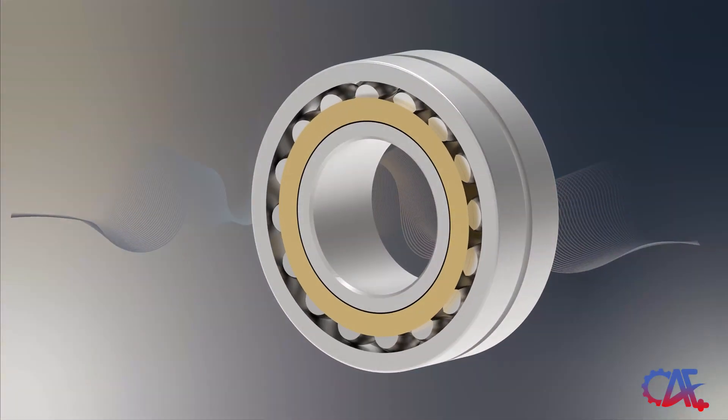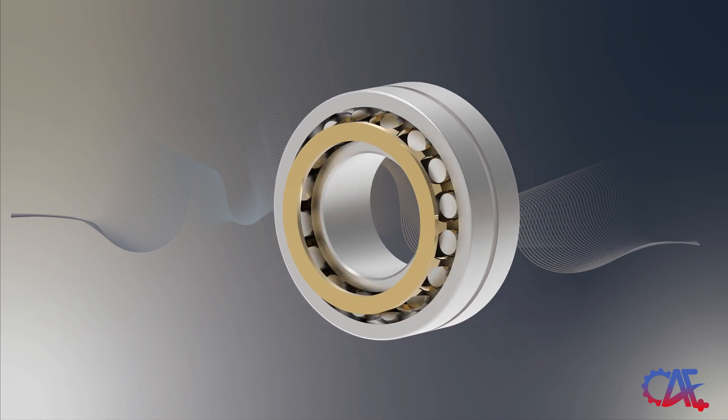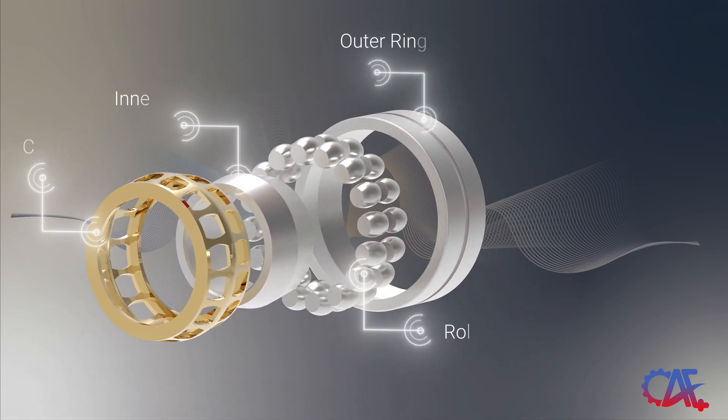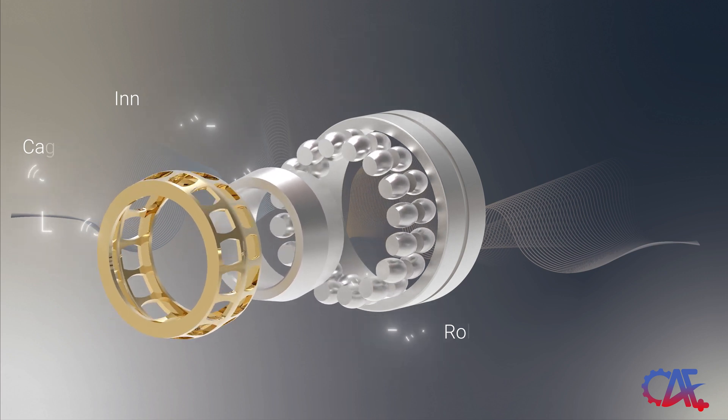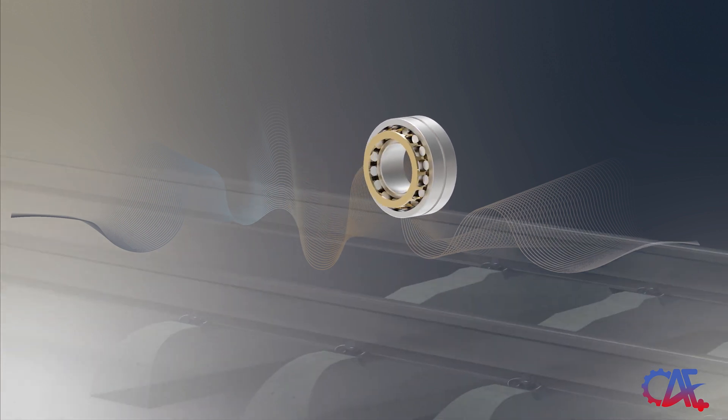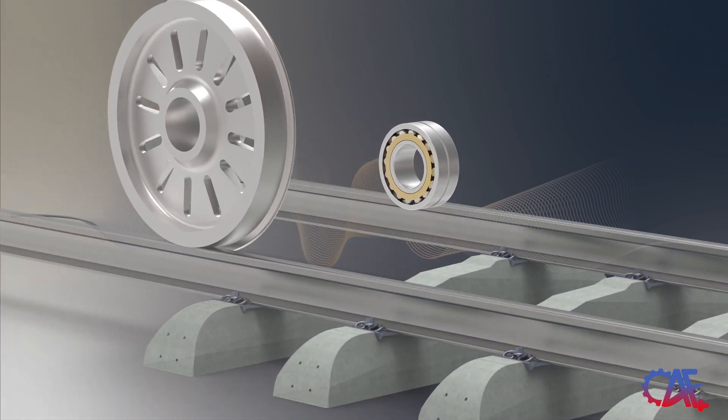Spherical roller bearings have special design. These bearings comprise two sets of symmetrical rollers, a shared outer ring with a curved raceway, a cage to secure the rollers aligned, and an inner ring with two raceways that are inclined at an angle to the bearing's axis.